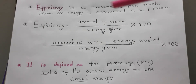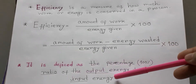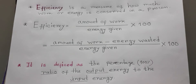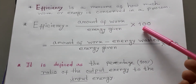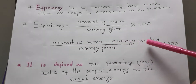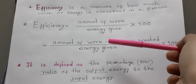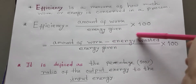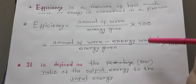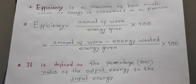Again, I am explaining. Efficiency is the ratio of the output energy to the input energy, expressed in percentage. Efficiency equals amount of work divided by energy given into 100, or equivalently, amount of work minus energy wasted. The energy that we have given, and due to friction or some other causes that amount of energy is wasted — we don't get work from that portion of energy. So we can deduct that portion of energy, make a ratio, and express it as a percentage. This is the basic formula of efficiency, and a very important formula for measuring how a machine or engine works efficiently.